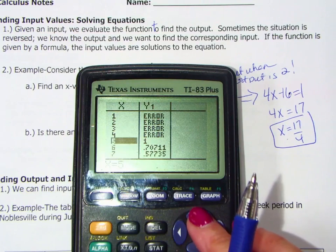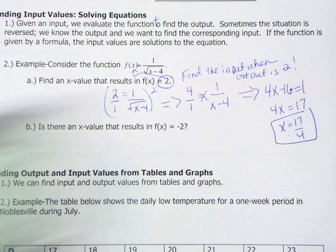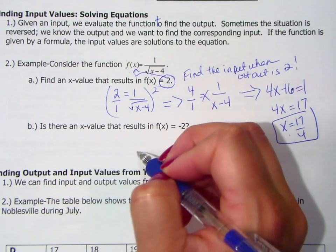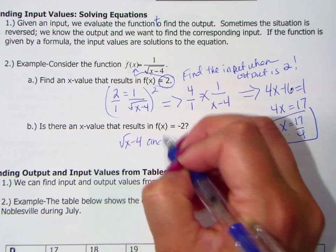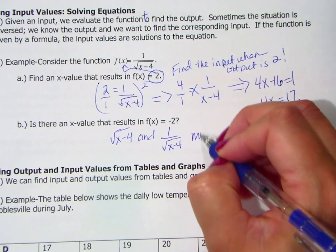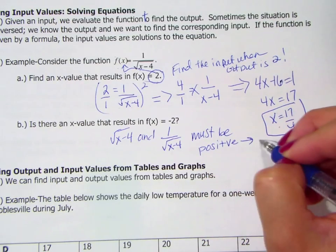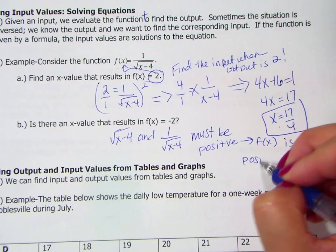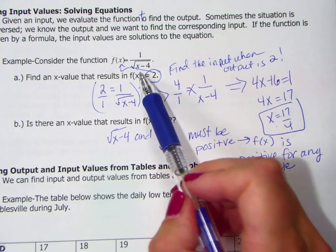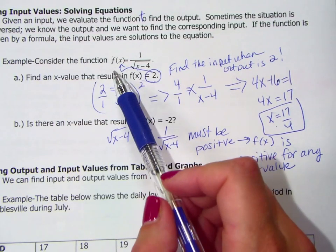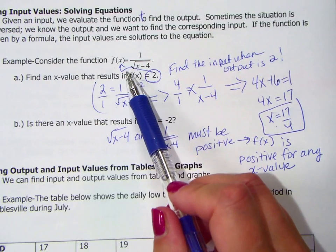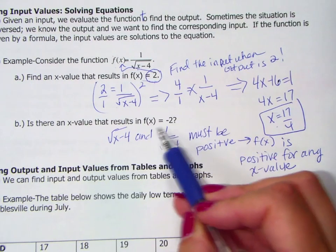This actually leads into what we're talking about next time with domain and range. Basically, what happens here is for this function to be defined, both of these quantities have to be positive. And we're going to, like I said, talk about this more next time. Both of these must be positive. Therefore, f(x) is positive for any x value. Okay, think about it. I can't take the square root of something and have it be a negative number. It doesn't make any sense. I can't plug in something to this function and have it come out to be a negative number. Okay? So there is no x value where we would get 2 out as our output.